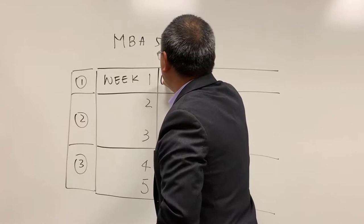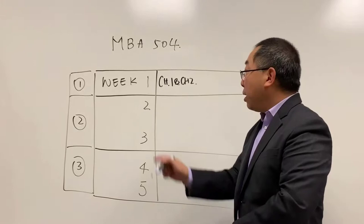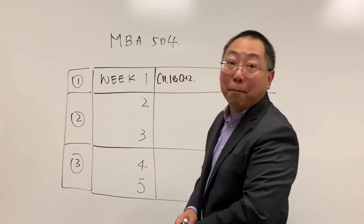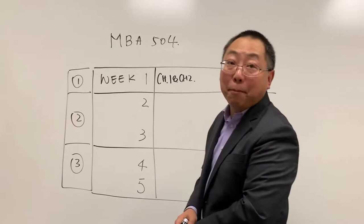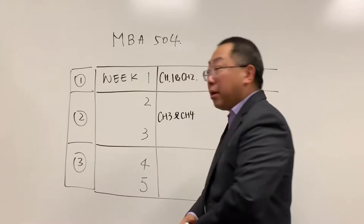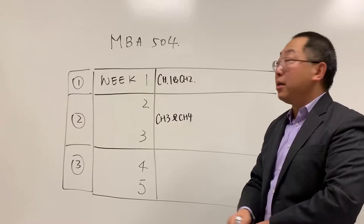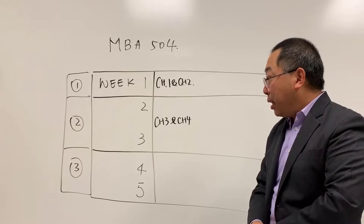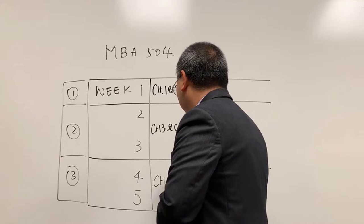In section one, week one, we will look at chapters one and two. In module two, weeks two and three, I will combine chapters three and four together — financial statements and analysis, introduction to managerial finance, financial markets, and institutions. In the last section, weeks four and five, we will focus on the time value of money topic in chapter five.